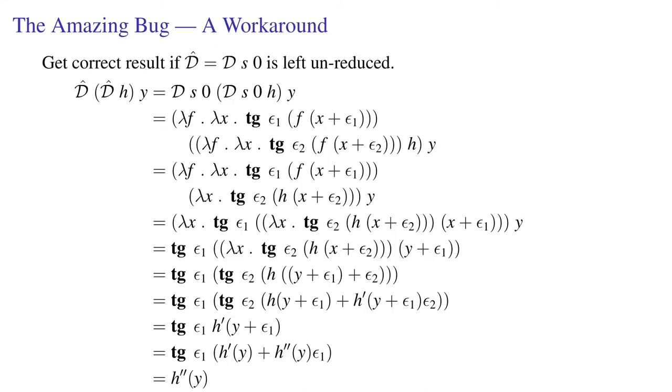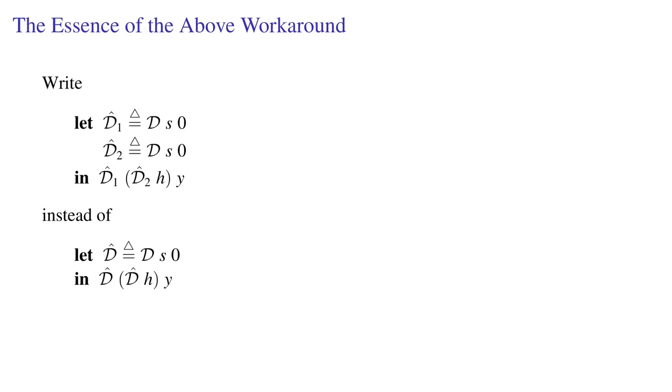Here's an idea for a workaround. We would have gotten the correct result if d-hat had been left unreduced. So instead of writing that expression at the bottom where we used d-hat twice, we could define d-hat twice and use the two different definitions. That would be okay, except it's manual and horrible.